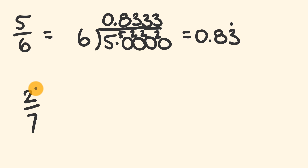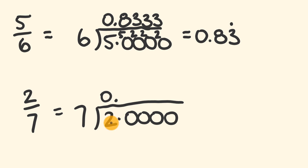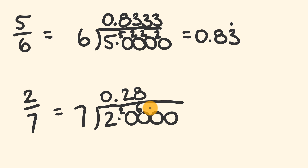Now let's convert 2 sevenths to its decimal. We set up our division problem with the 7 on the outside and the 2 inside. We're going to have a decimal with 4 zeros because this decimal goes on and on. We can straight away put the 0, put the decimal, and carry that 2 across. How many times does 7 go into 20? It goes in 2 times — 2 times 7 is 14 — leaving 6 remainder. How many times does 7 go into 60? 7 eights are 56, so that's an 8 with 4 remainder.